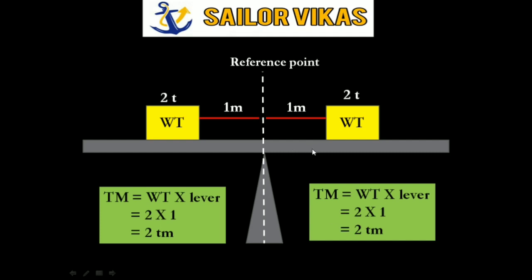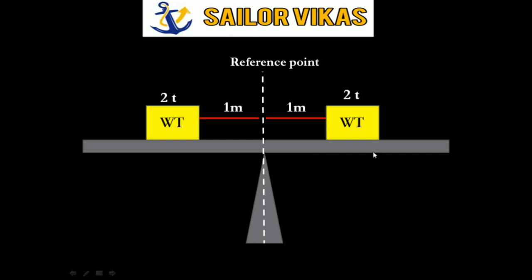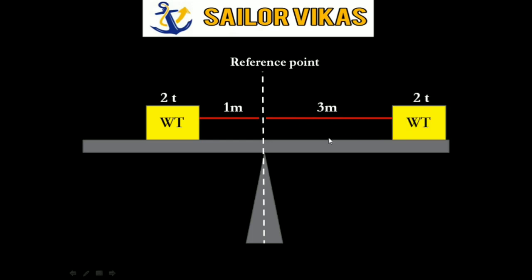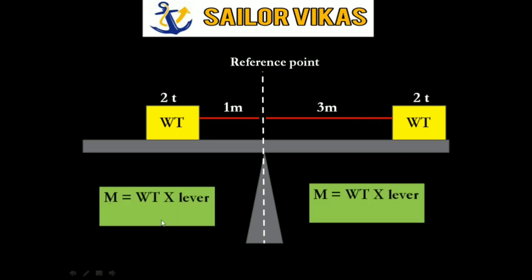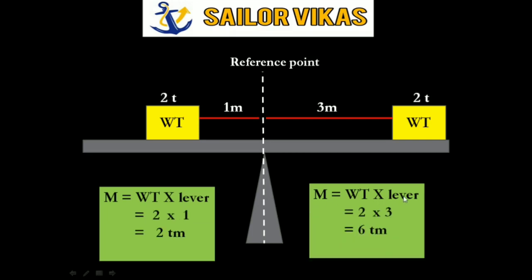Now I have shifted the weight to 3 meters from the reference point. Applying the same formula — weight into lever — on the left side the moment remains 2 ton-meter, but since the lever has increased on the right side, the moment has increased to 6 ton-meter. Because the right side moment is greater, the seesaw will tilt.